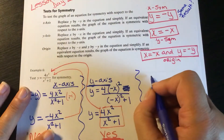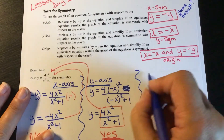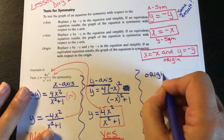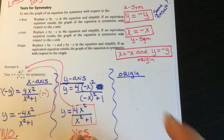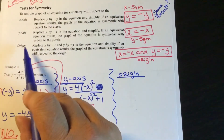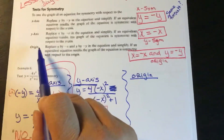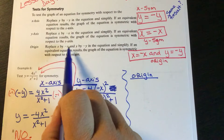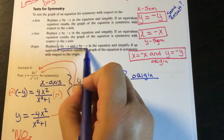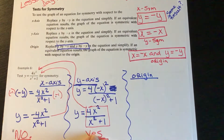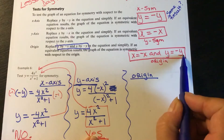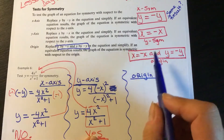Now we want to know: is the equation symmetric about the origin? We have three different tests here. If an equation is symmetric about the origin, you're going to replace x by negative x and y by negative y. So you've got to do both the negatives. So x goes to negative x, y goes to negative y — and we check: do we get the same equation?